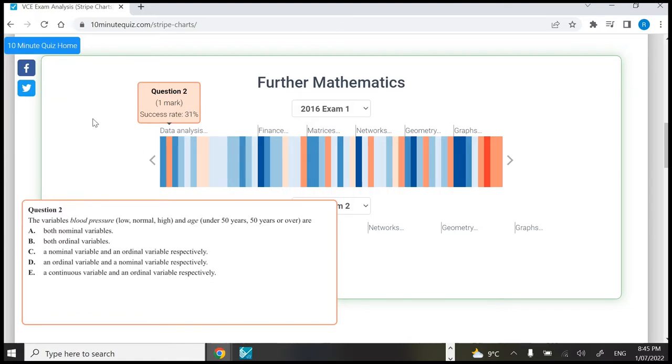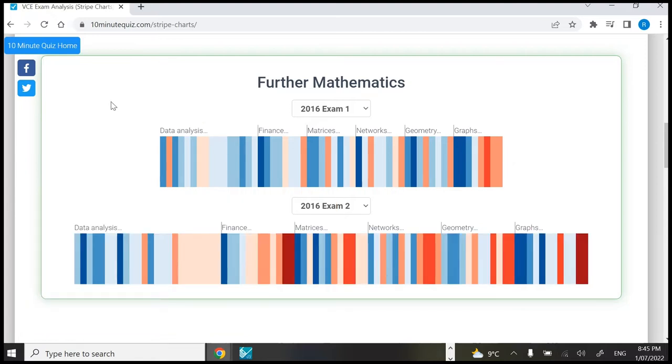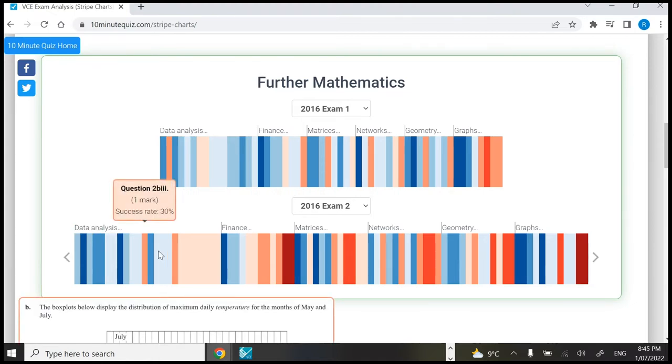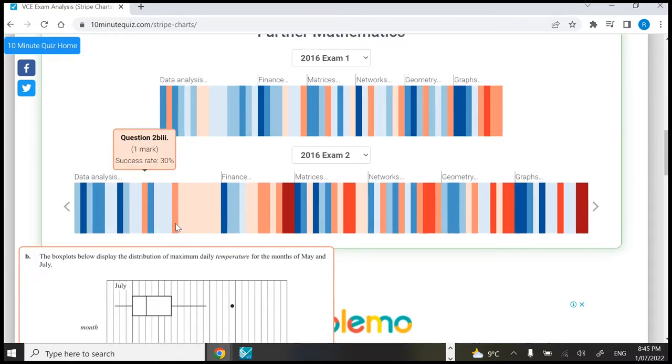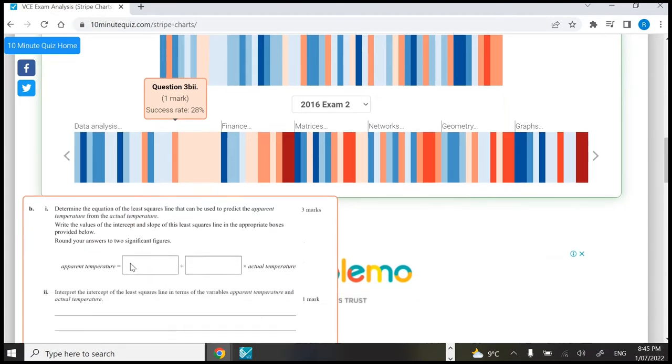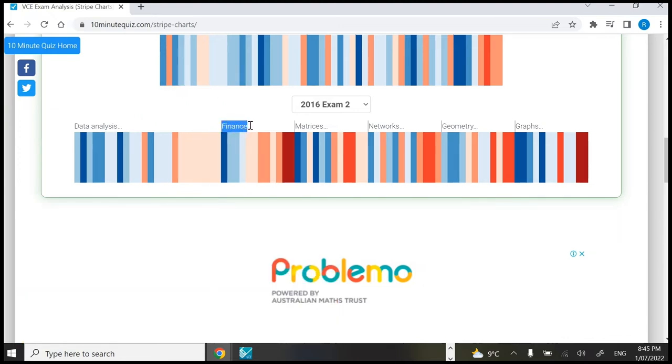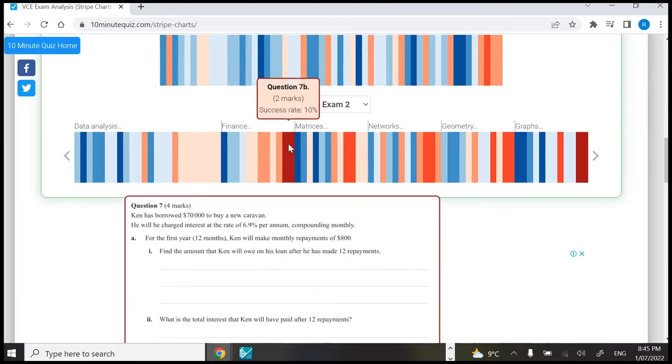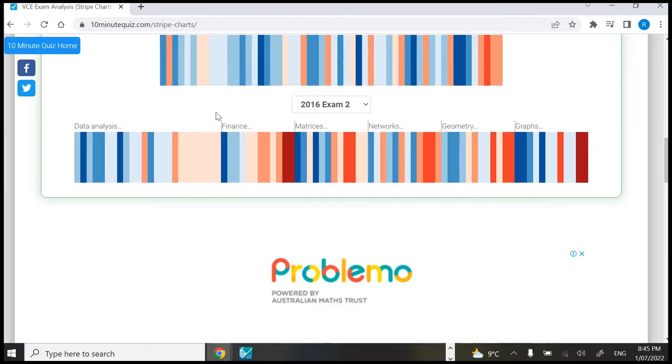Question 2 here, only 31% of students answered this question correctly, so we'll have a look at this question. In exam 2, we'll look at the data analysis section, a few of these questions where not many students got those correct. They were both towards the end of extended response questions. Later in the next video, we're going to jump into the finance section and have a look at these bright red questions that students found really difficult. But it's data analysis for now.